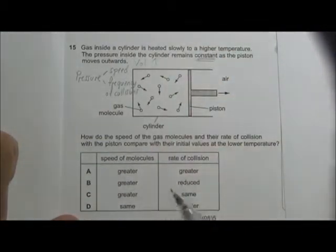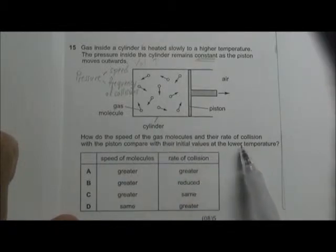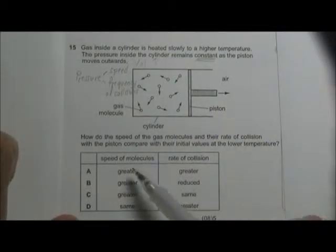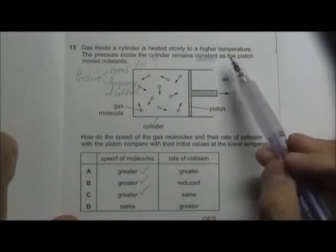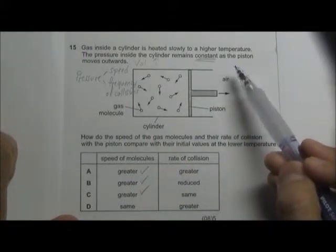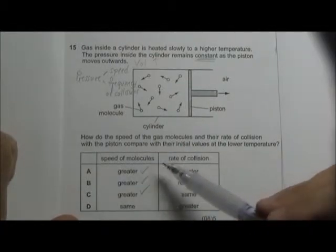Now let's look at how the speed of the gas molecules and the rate of collision changes upon this change. The speed of molecule has to be greater because the gas molecules are at a higher temperature. So higher temperature, they will have a greater kinetic energy, hence the speed will be larger.